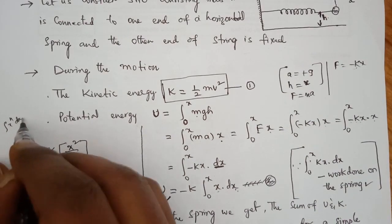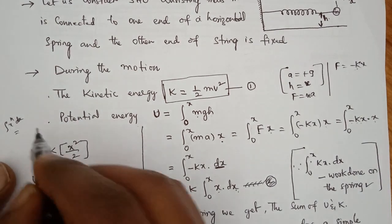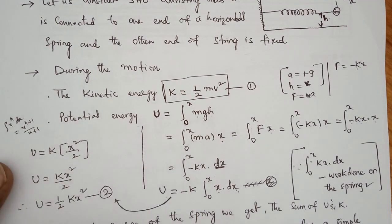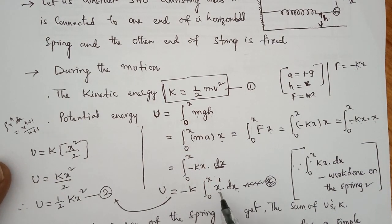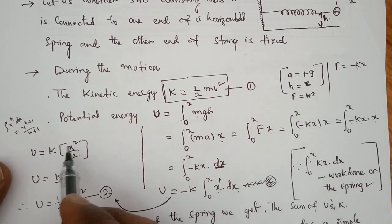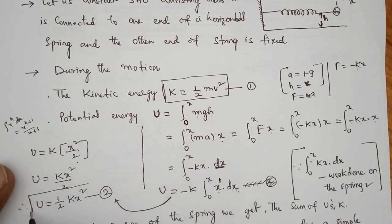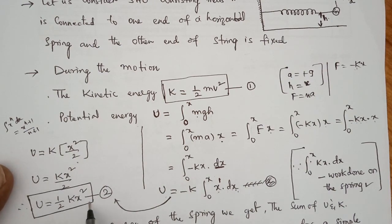This is in the form of integration of x power n dx, and using the formula x power n plus 1 divided by n plus 1. With n equal to 1, we get x power 1 plus 1 by 1 plus 1, which equals x squared by 2. So the potential energy U is equal to half into k x squared. This is equation 2.